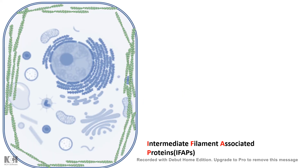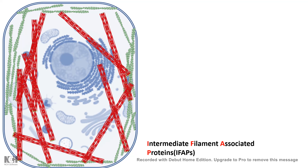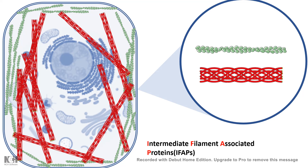Just as microtubules have microtubule-associated proteins governing their stability, intermediate filaments have certain associated proteins known as IFAPs. These proteins are not yet well characterized — only a few are known and more are yet to be discovered. These proteins cross-link intermediate filaments to each other or cross-link them to the actin cytoskeleton. One such protein is plakin, which cross-links intermediate filaments to microfilaments, providing even more structural support.